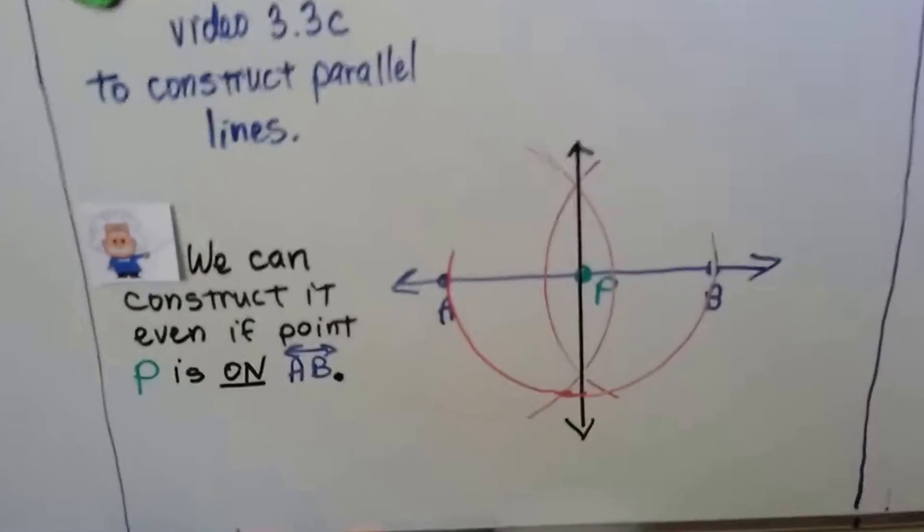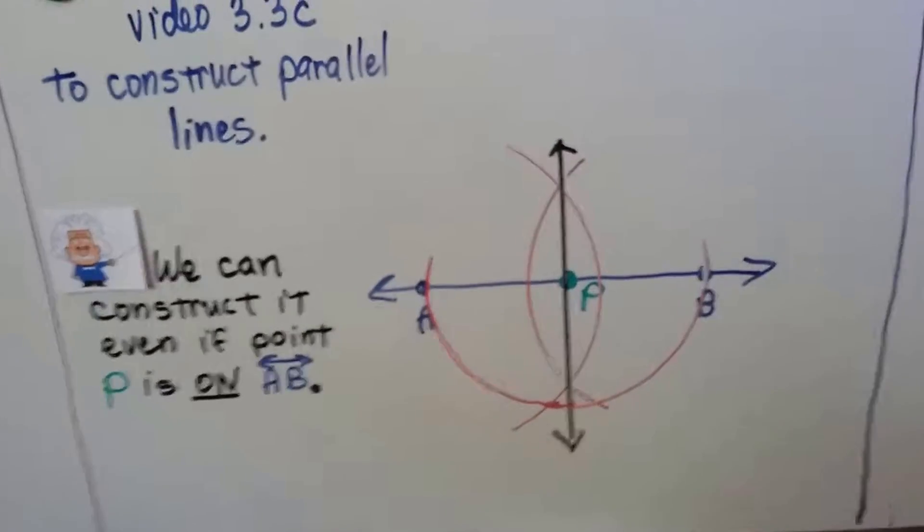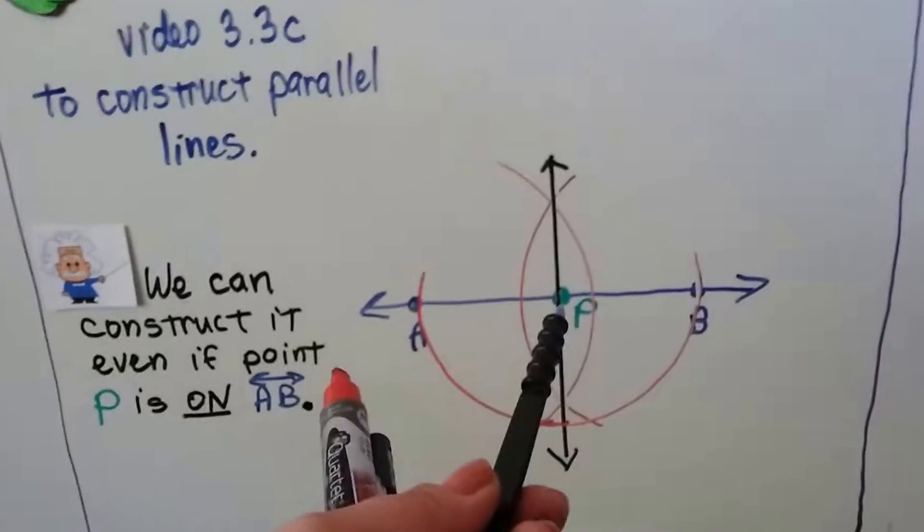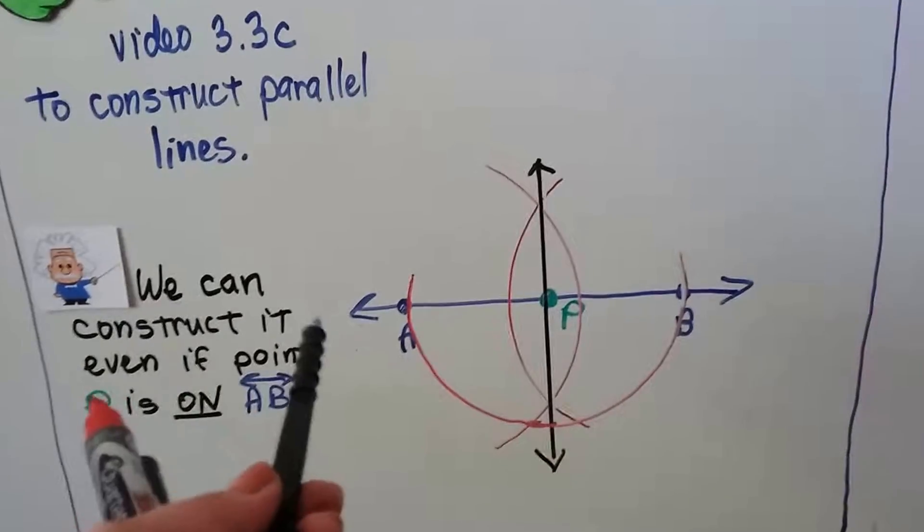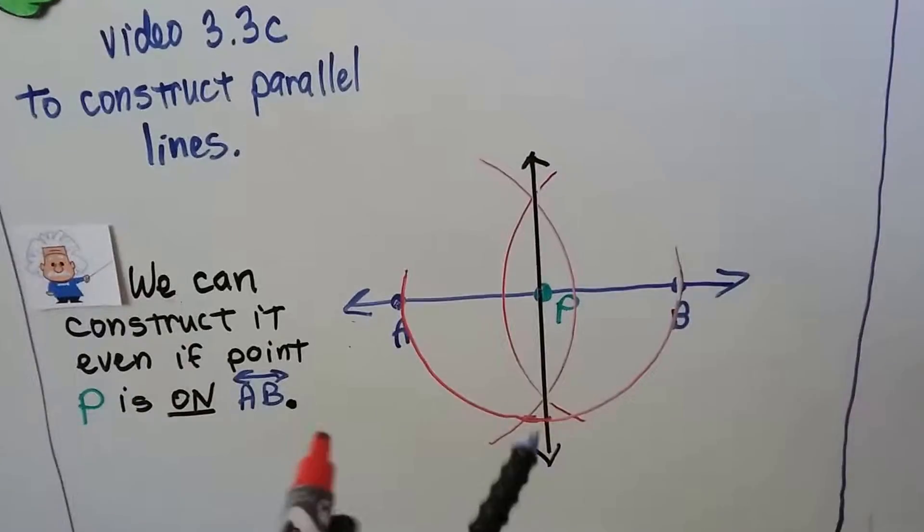And we can construct it even if point P is on line AB. So here point P is on line AB. So let's say there is no AB. Let's say there are no points at the end.